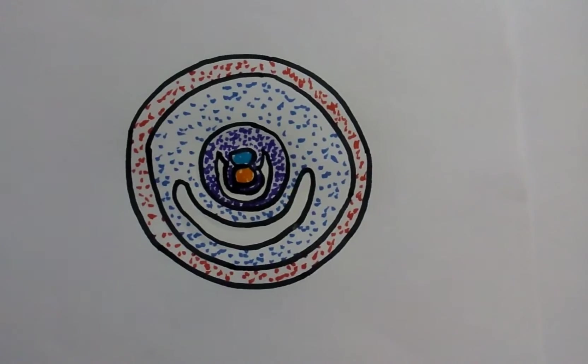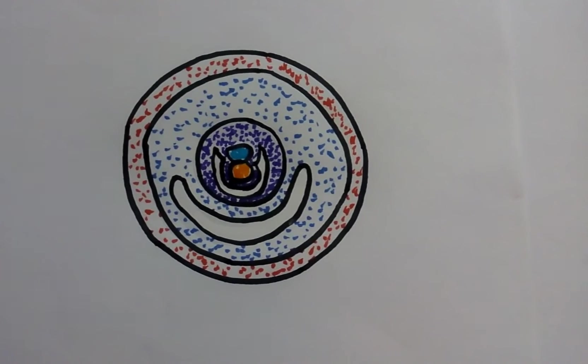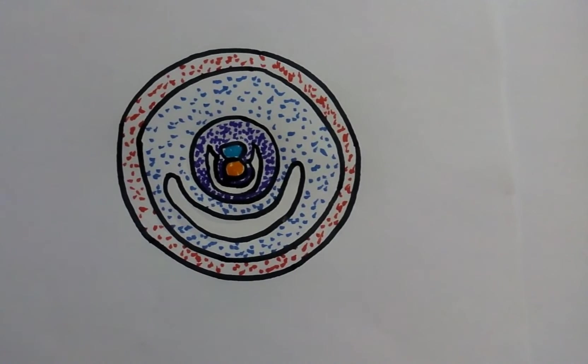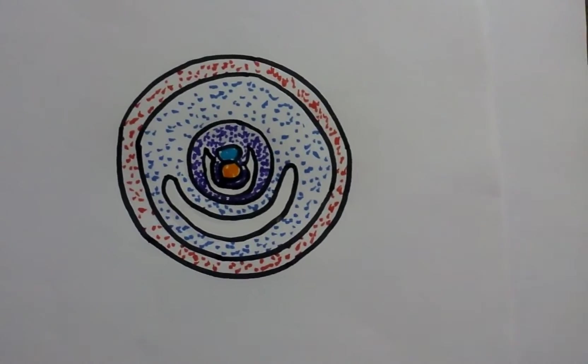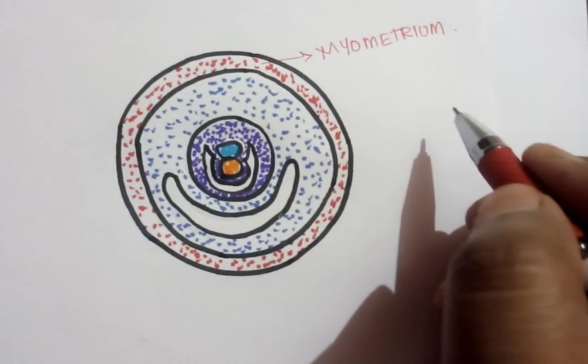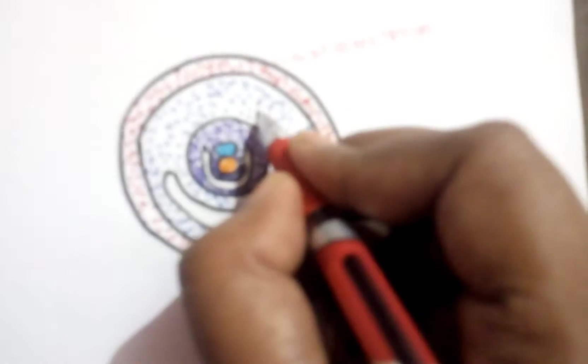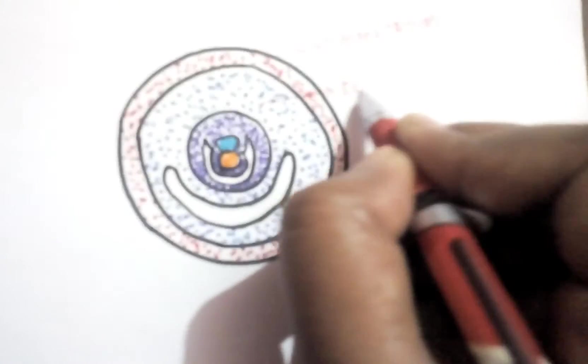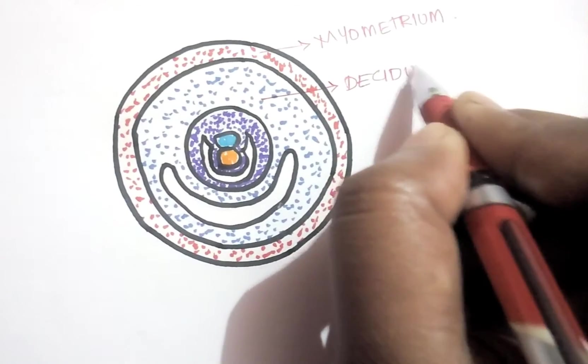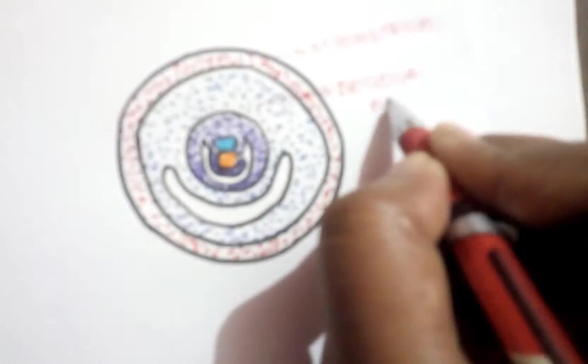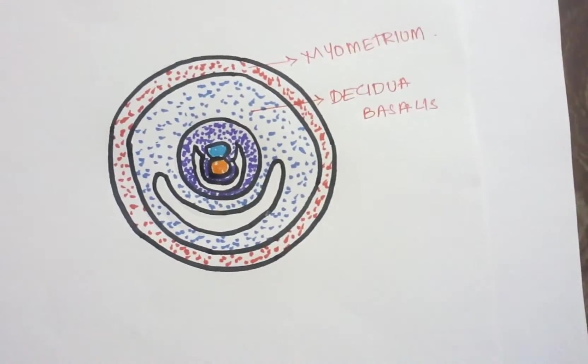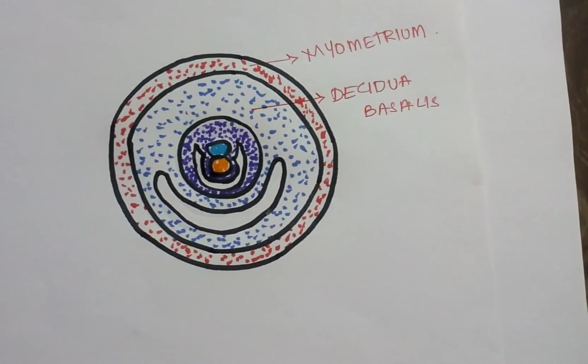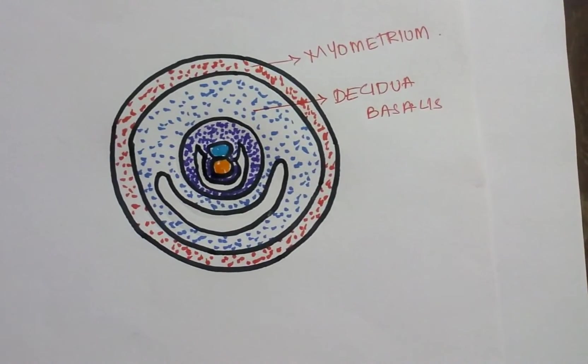This is called as implantation. Based on the site of implantation, the decidua, that is endometrium, is divided. This part of decidua is called as decidua basalis. This part will form the placenta. From this point, the placenta will develop.